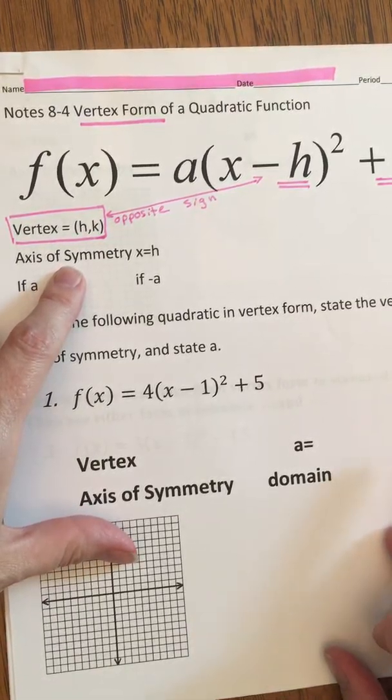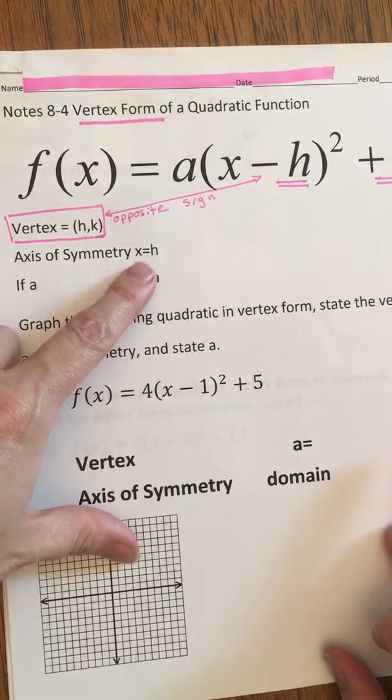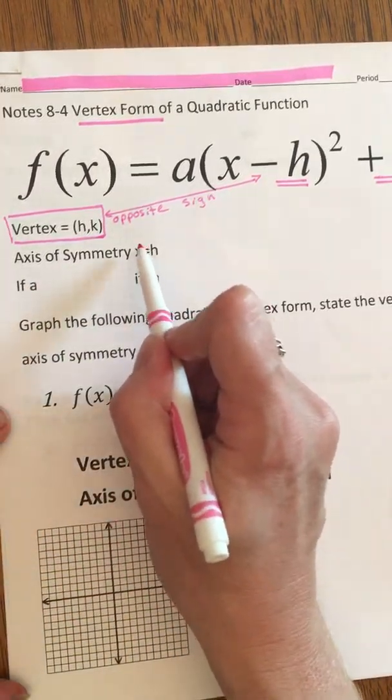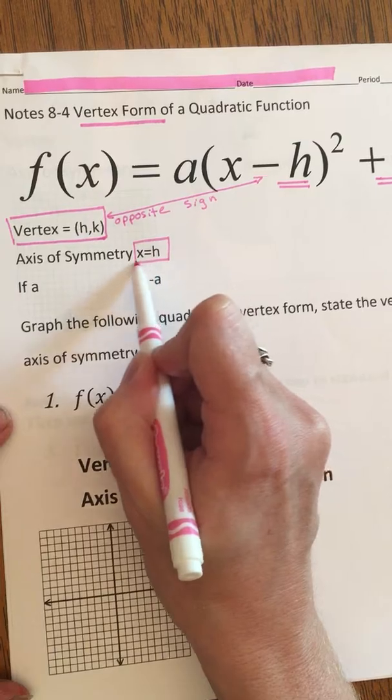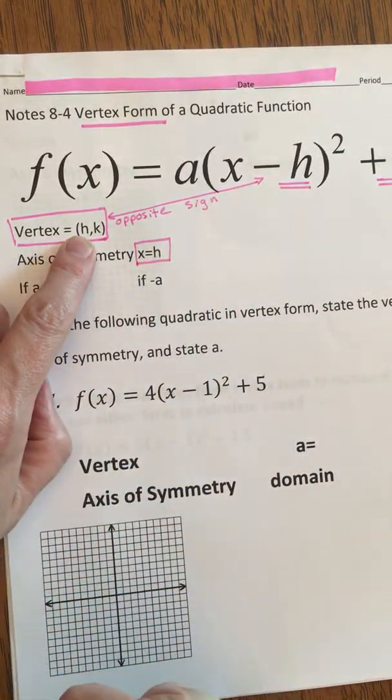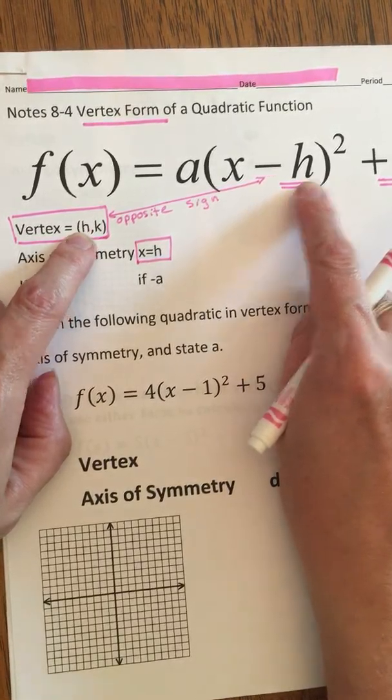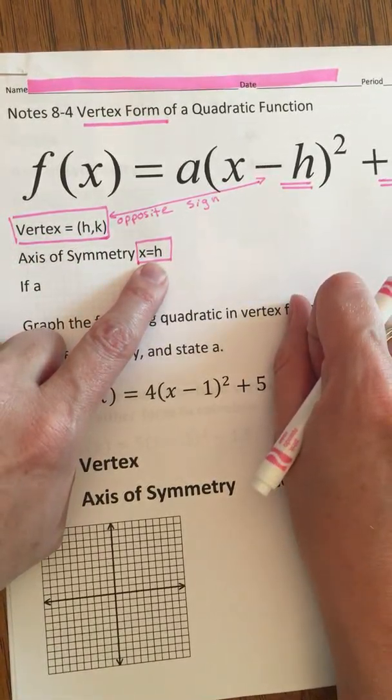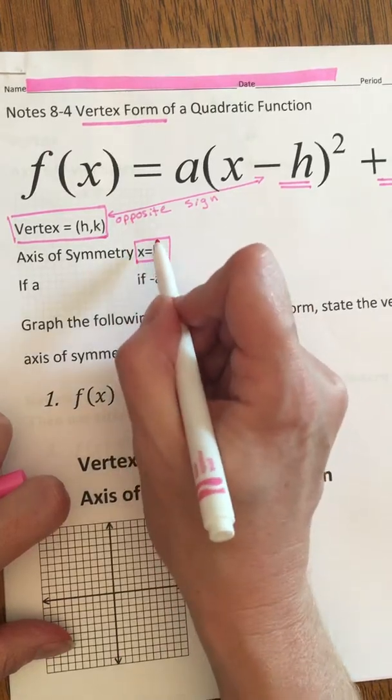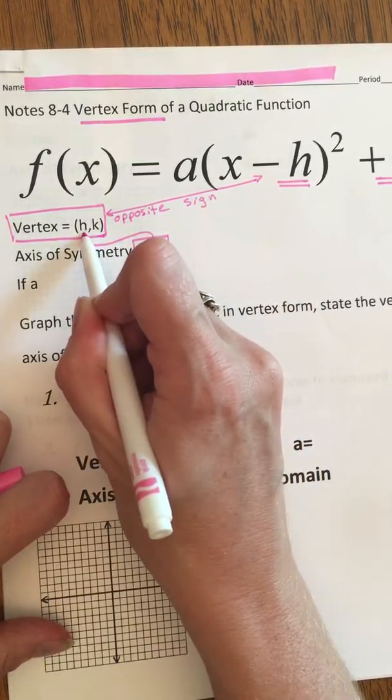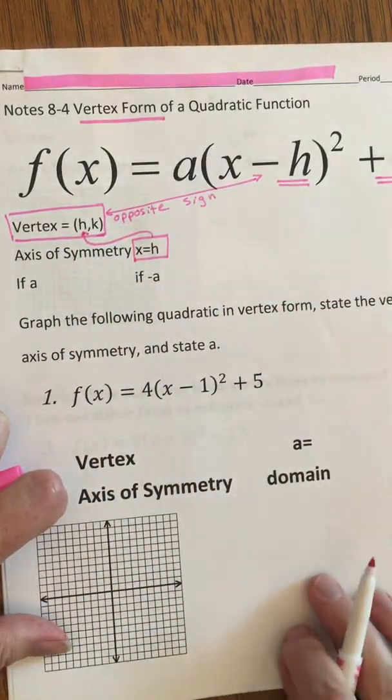We see that the axis of symmetry is always the equation of x equals h. Whatever this h is, whatever this h is, opposite sign, is that h right there. They are the same. So we can draw another arrow to tell us where we got that information from.